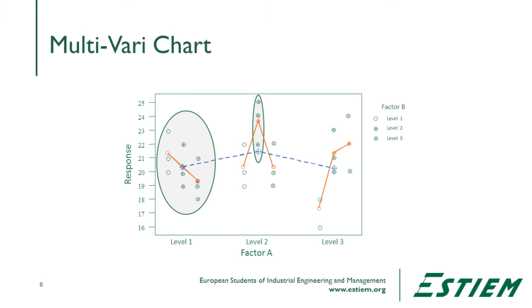Looking at the graphic, we have two different factors. The response variable here involves heating metal in a process called sintering, so the Y is hardness — bigger is better. There are three different levels, which in this case happen to be three different combinations of metal type. At level one, as we change the process factor across three different process changes, the metal gets weaker. At level two, the metal first gets stronger, then decreases and gets weaker as we continue to increase that factor. At level three, the metal keeps getting stronger as the process factor increases.